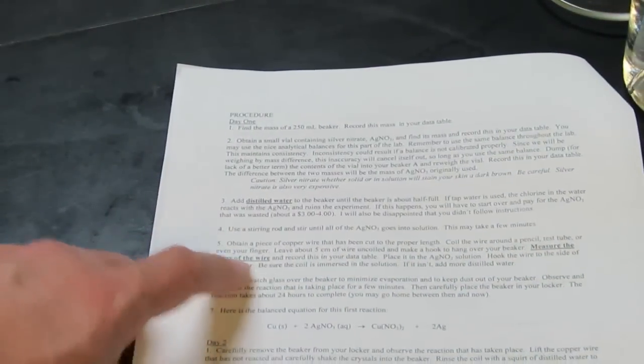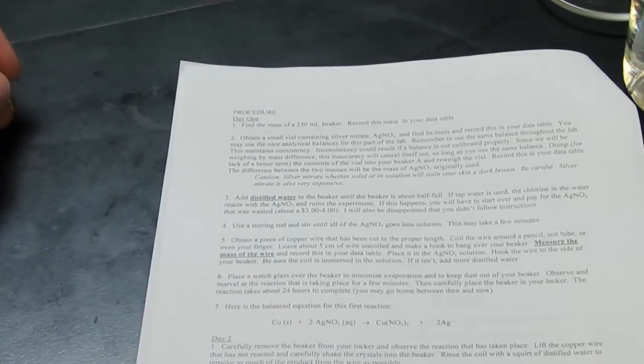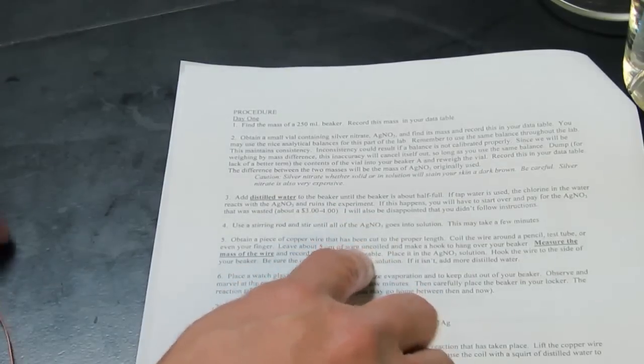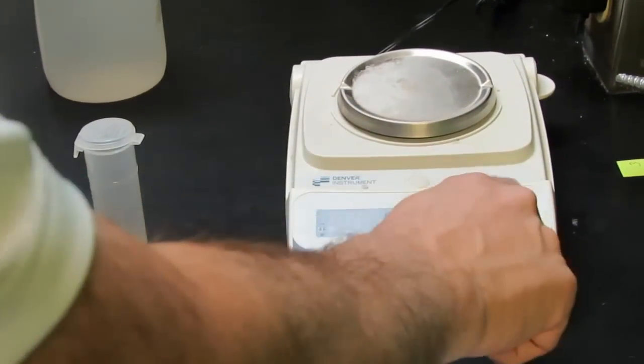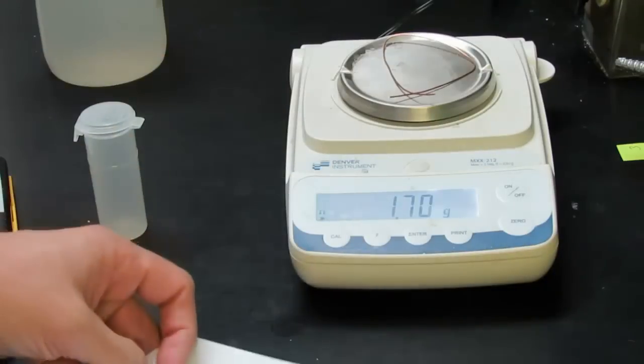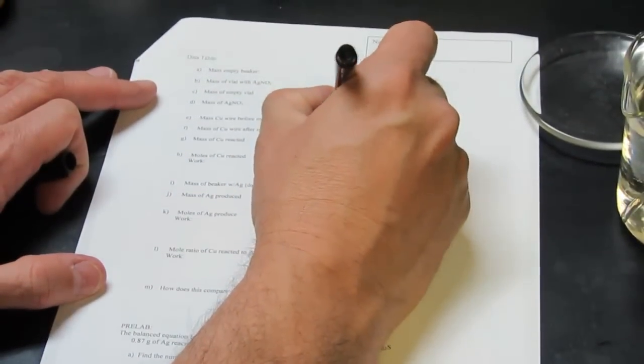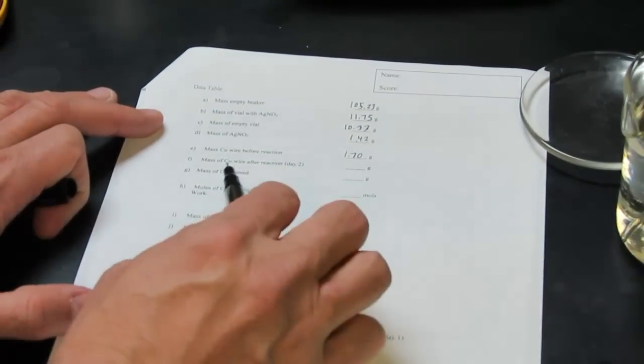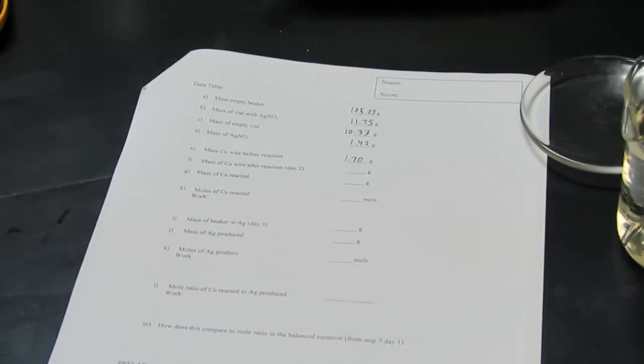We're going to get a piece of copper wire next. You can either use your finger, a pencil, or a test tube and wind that around. But before we do that, we want to measure the mass of the wire. We're going to put our copper wire on the balance pan. It looks like I have 1.70 grams of copper wire, so we're going to record the mass of the copper wire, 1.70 grams. Now the next blank on our data table says the mass of copper wire after the reaction, but you can't do that until the reaction is over with, and we won't find that until day two.